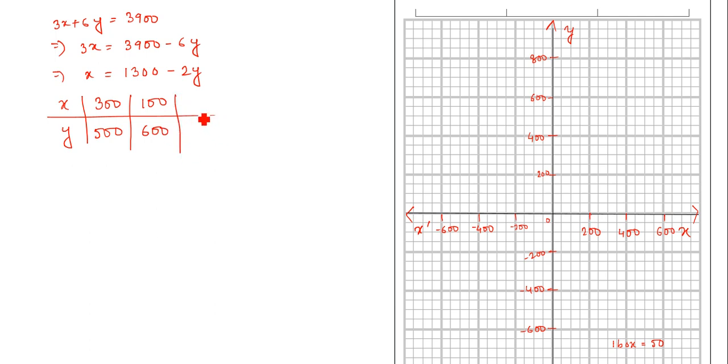And for x equals minus 100, y will be 700. Now we will plot these points. That is 300 comma 500, right? So first one is 300 comma 500. Next 100, 600,